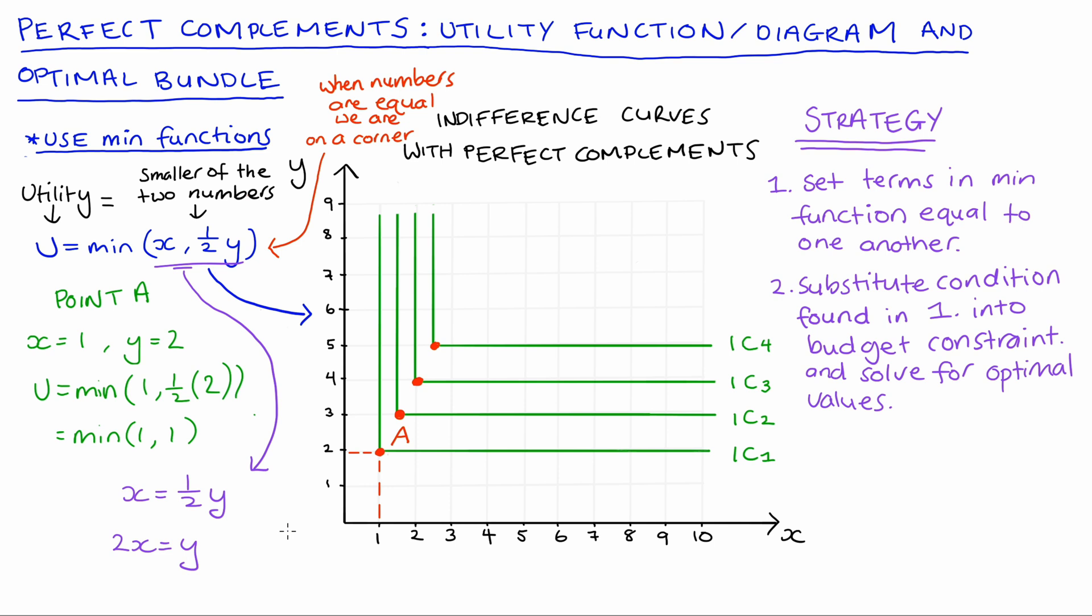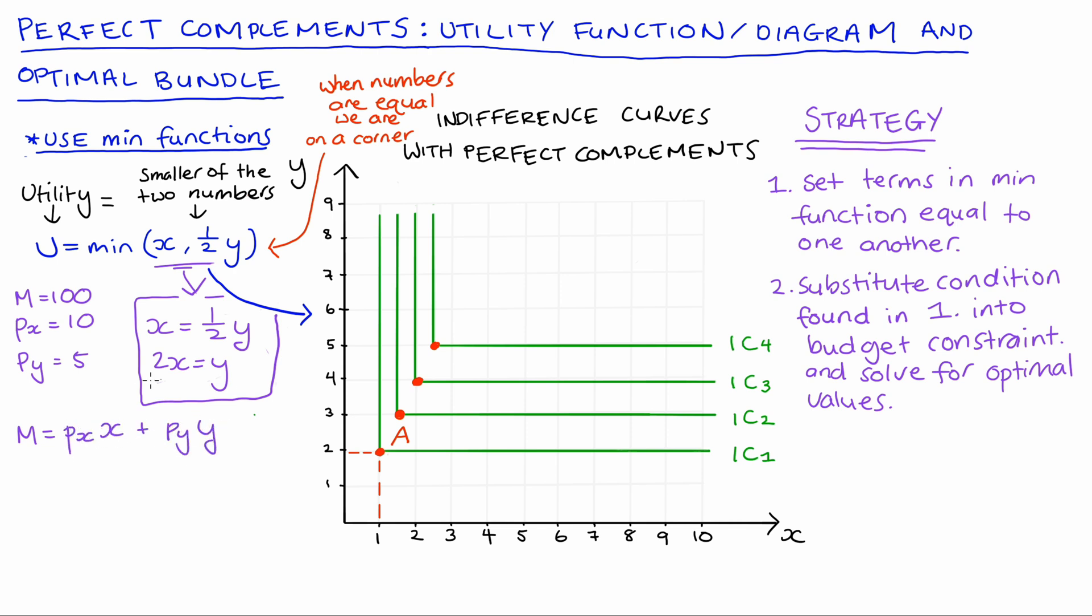So for example here for instance let's just say our income M equals 100, the price of good x Px equals 10, the price of good y Py equals 5. So our budget constraint will be, well M will be equal to the price of x times x plus the price of y times y. So substituting our values in we get 100, that's our income, will be equal to 10, that's the price of x, times x plus 5, that's the price of y, times y.